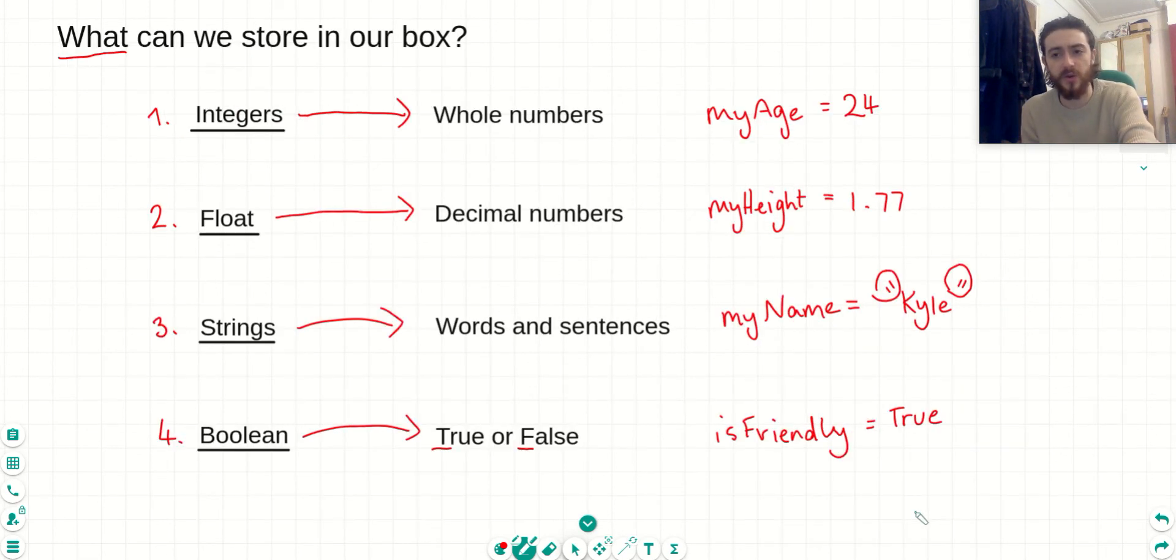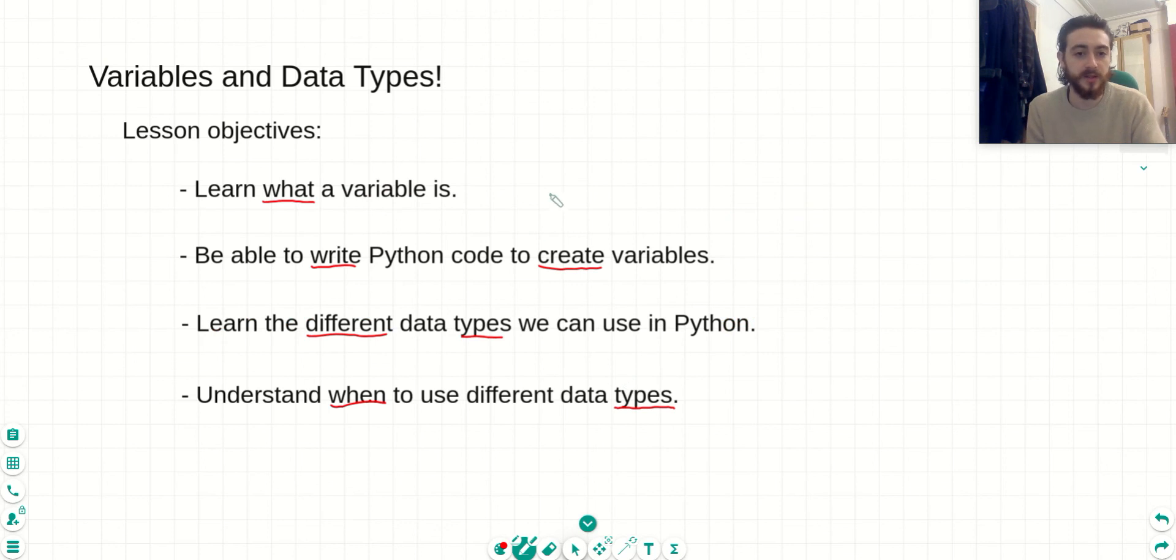Just to quickly go back to our objectives to recap, we learned today what a variable is. It's a bit like a box and it has a name and some data inside of it. We wrote Python code to create variables, which was just by using name equal to the data we want to put inside of it. We learned the different types of data that we can use in Python, which is integers, float, string, and boolean. And we tried to understand when to use these different data types. So we use an integer for something that can only be a whole number. We use float for when things can be decimal numbers. And we use strings for any text we want to store and boolean when it only has two possible values.